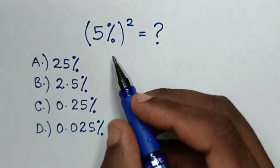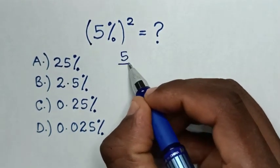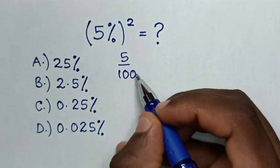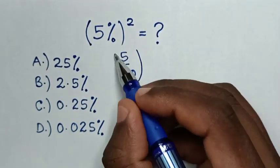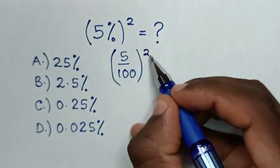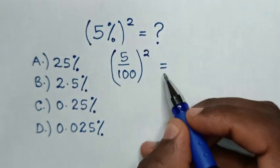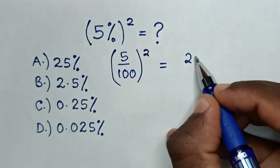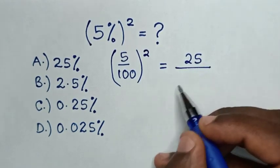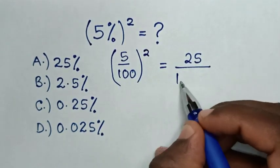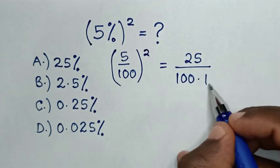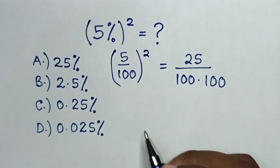From here, 5% is 5 over 100, then brackets square. This is equal to 5 square is 25 over 100 square is same as 100 times 100.